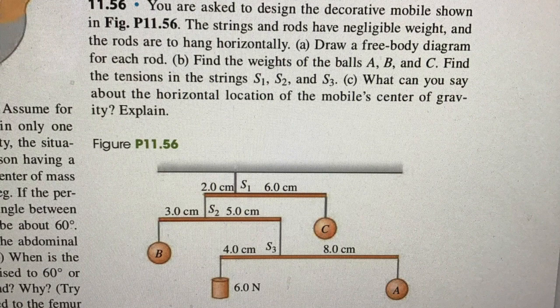The two conditions for equilibrium are: the sum of the torques on the object is zero — no net torque — and the sum of the forces on the object is zero — no net force. In this case, all the forces are in the y direction, so we only need to satisfy the equilibrium condition in the y direction.